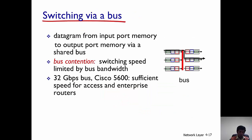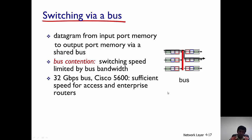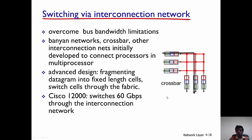The next generation of routers have switching done via a bus. The datagram travels from the input port to the output port via a shared bus. As you can see, there is a shared bus between the input and output ports, and datagrams are sent via this bus. The switching speed is now limited by the bandwidth available for the bus.